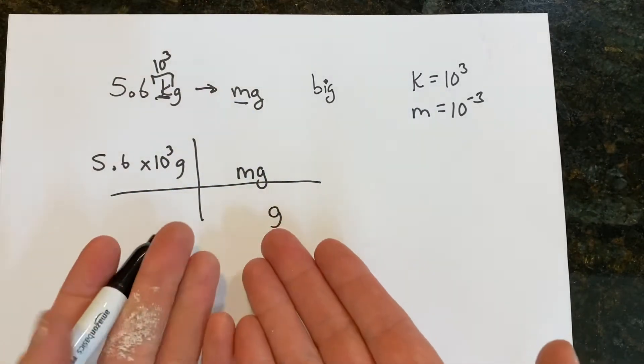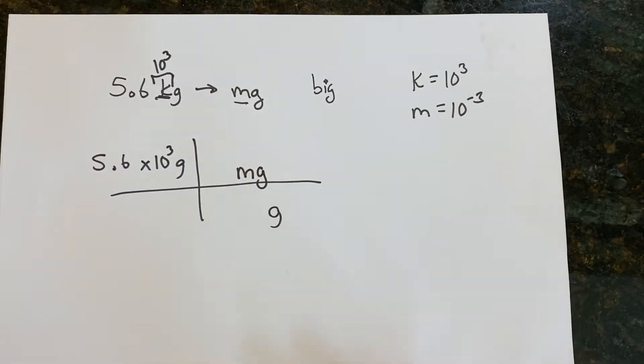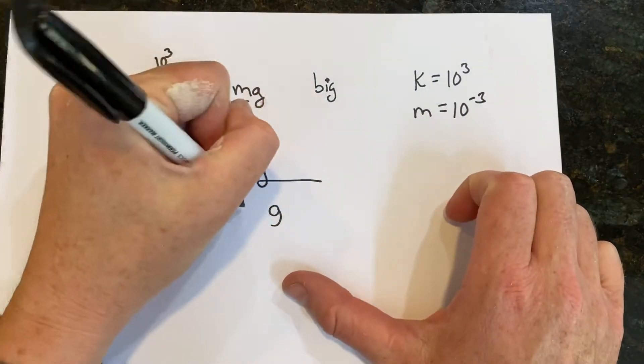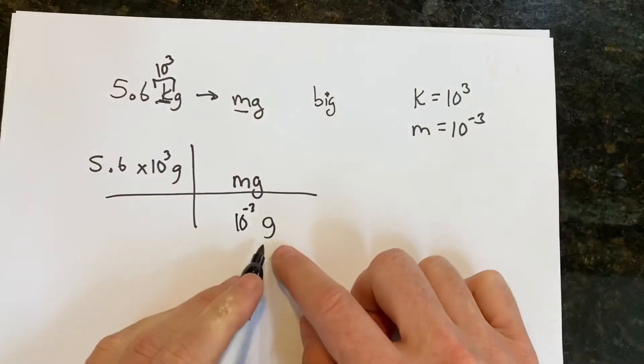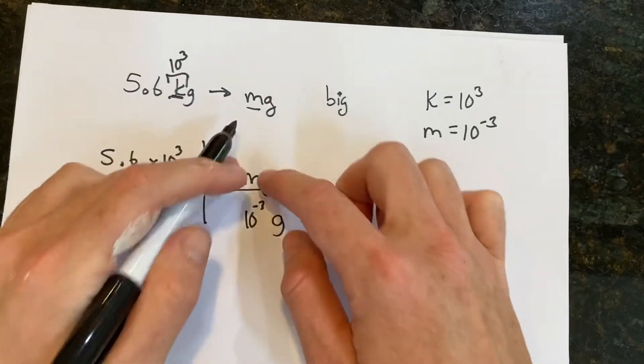Now your next question is, okay, well how many milligrams are in a gram? Well that's easy because we know that a milli is 10 to the negative third. So there are 10 to the negative third grams in a milligram, these two things are equivalent.